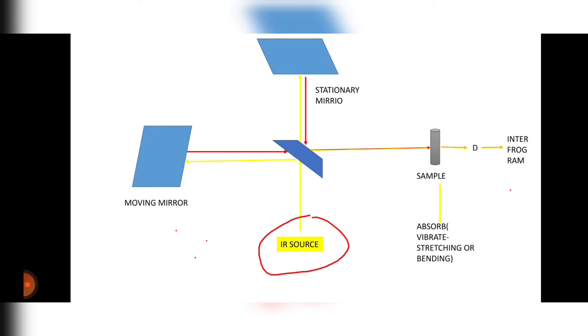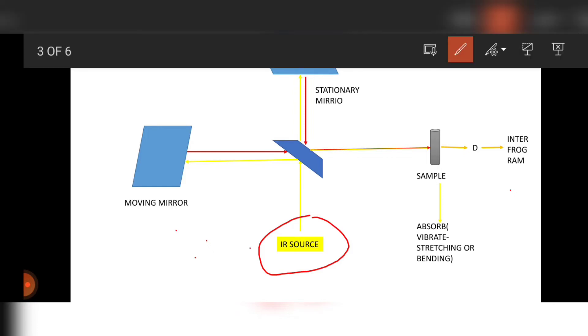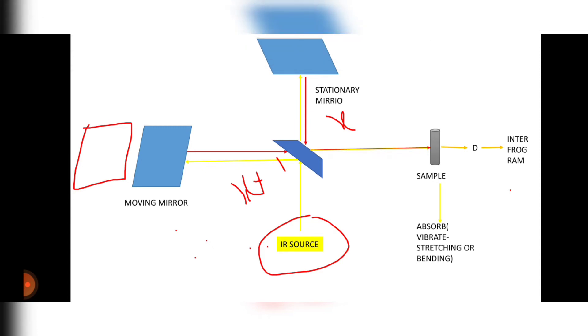This moving mirror can be moved. The distance from this divider to the stationary mirror is equal. Let us consider the distance is x. If the moving mirror is moved, then the distance will become x plus 1, and here the distance will become x. The moving mirror moves but the stationary mirror is not movable.